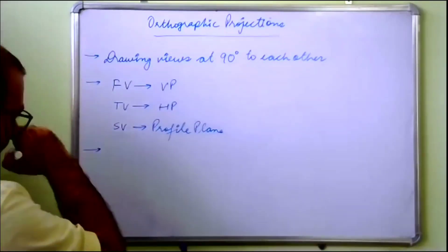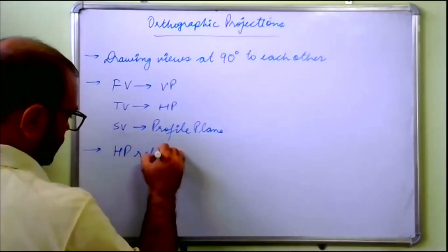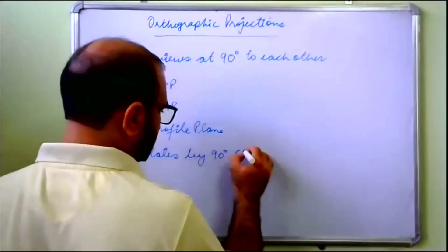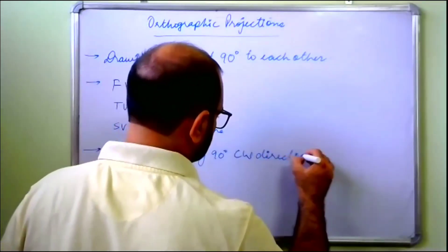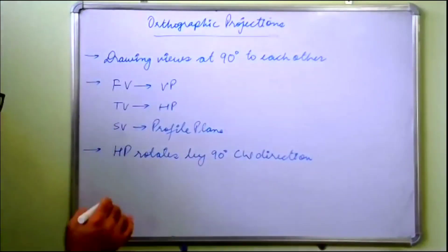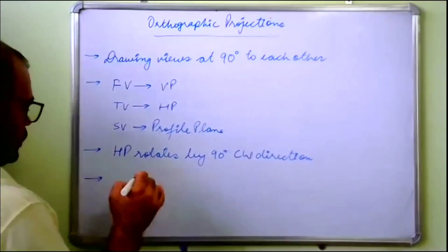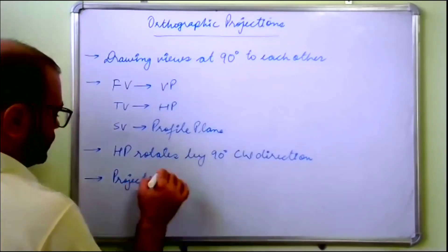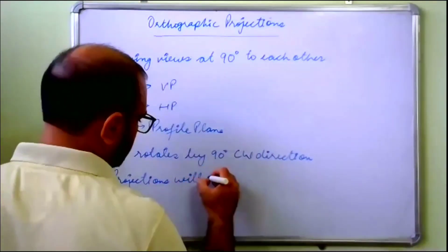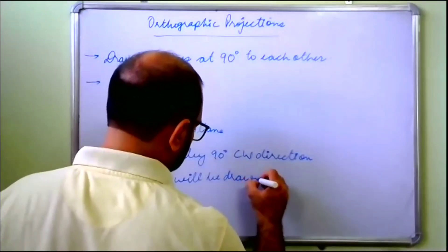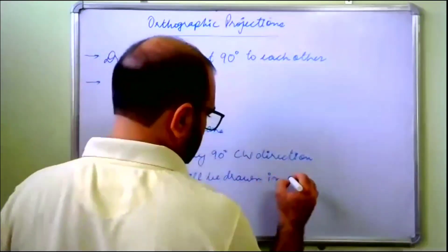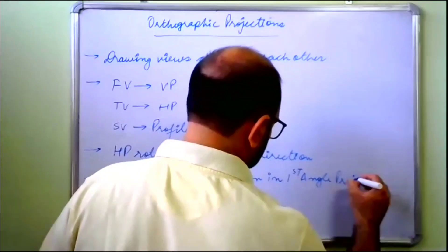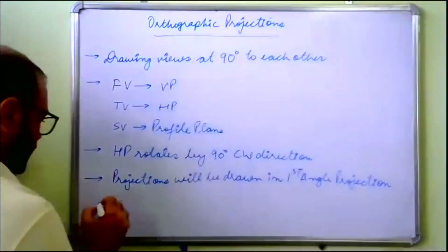Next, we know that the HP rotates by 90 degrees in the clockwise direction. Projections are drawn here — the front view is drawn in first angle projection or third angle projection.